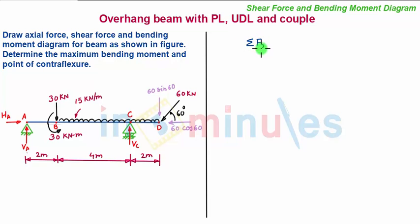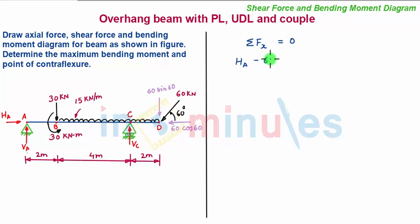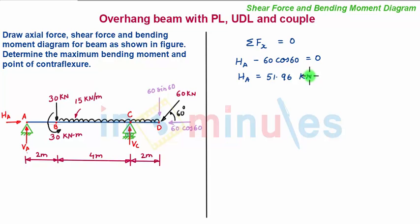Next we apply the third static equilibrium equation: summation of Fx equals zero. We consider all horizontal forces. The first horizontal force is HA. Our sign convention is rightward force positive, leftward force negative. So we have HA positive minus the horizontal force 60 cos 60, equal to zero. Since there are only two horizontal forces in this beam, on solving we get the value of HA as 51.96 kN. Since the value is positive, our assumed direction is correct.